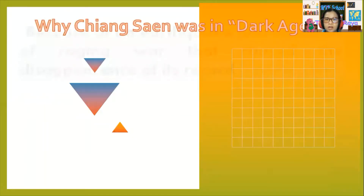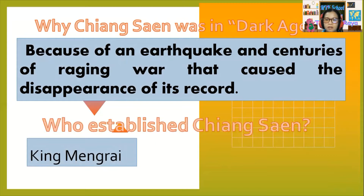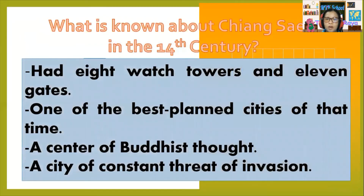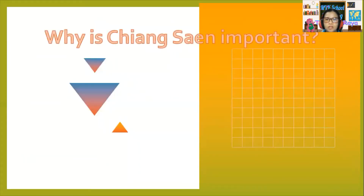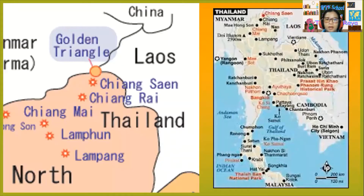Why was Chiang Saen in a dark age? Because of an earthquake and centuries of raging war that caused the disappearance of its records. Who established Chiang Saen? King Mengrai — that's correct. What is known about Chiang Saen: in the 14th century it had eight watchtowers and eleven gates, one of the best-planned cities of that time, a center of Buddhist thought, and a city of constant threat of invasion. Why is Chiang Saen important? It is the original birthplace of the Lanna kingdom and a source of the dynasty that would eventually reign in Siam's Ayutthaya period. In this map, Chiang Saen is located in the northern part of Thailand.